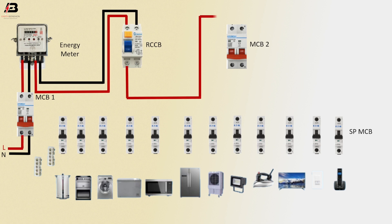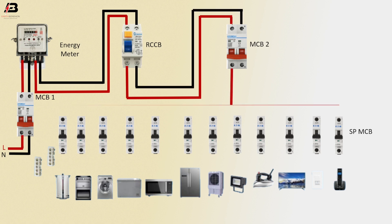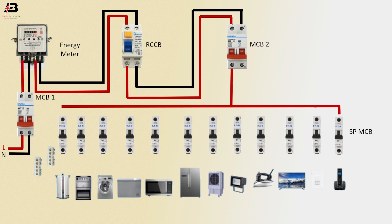Phase connection outgoing from energy meter to connect RCCB circuit breaker. RCCB to connect MCB, neutral connection outgoing from RCCB to connect MCB circuit breaker 2. Phase connection from MCB circuit breaker 2 to connect all single-pole MCB circuit breakers. Phase connection from all MCB circuit breakers to all loads.